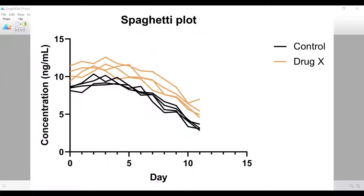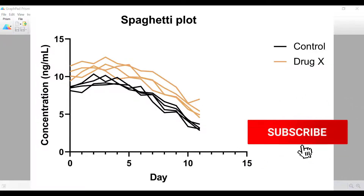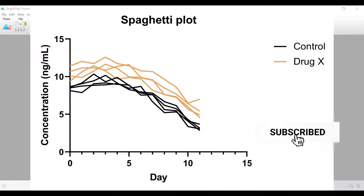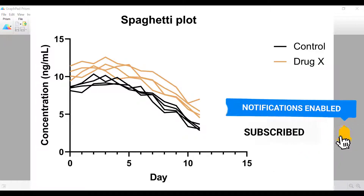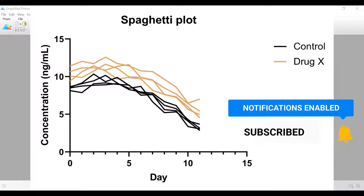A spaghetti plot is a type of line graph that commonly presents longitudinal data showing individual traces for each subject or another experimental unit. In Prism there are two variations of the spaghetti plot.